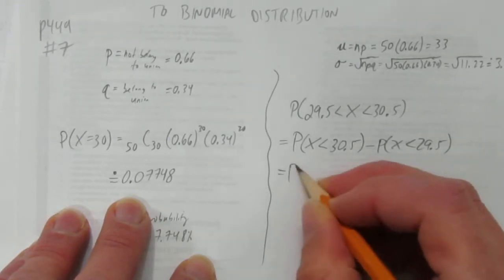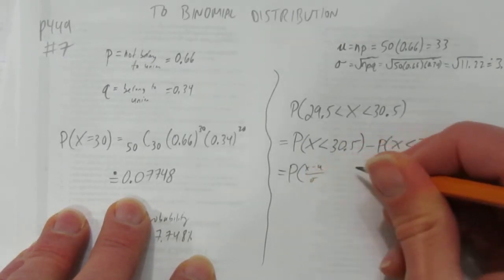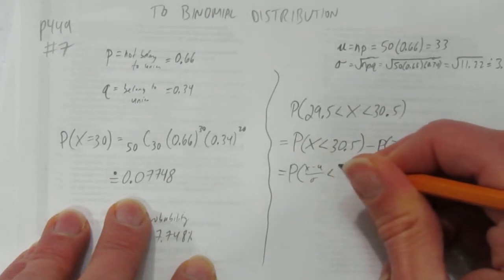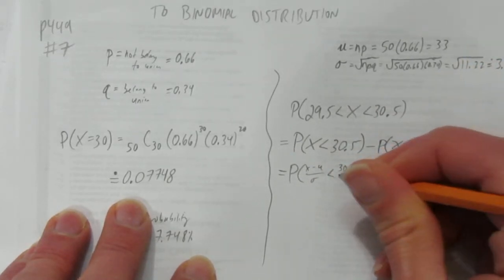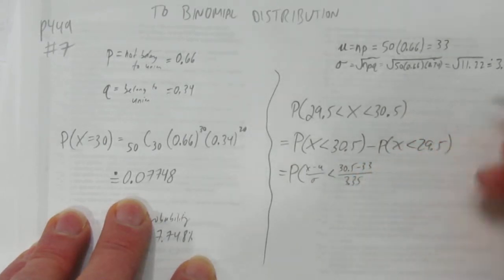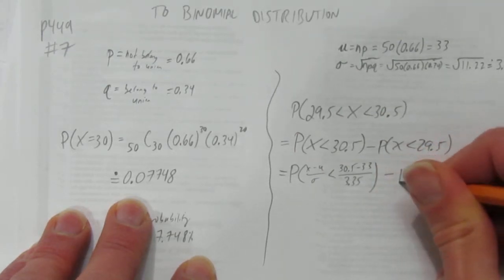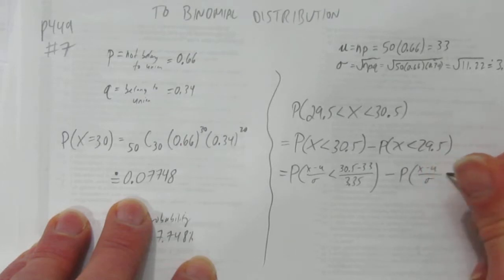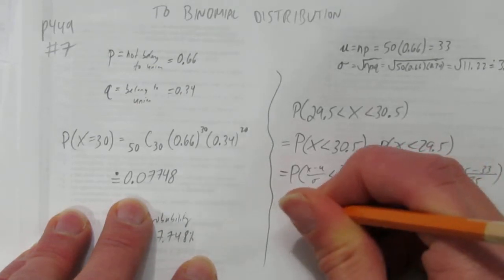Now let's transform them to the base normal distribution. So X minus mu over sigma. So let's do that. It's 30.5 minus our mean, divide by our standard deviation, which you can just write 3.35 or 3.350. It doesn't matter now.